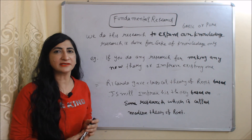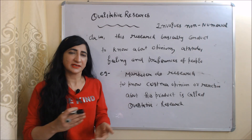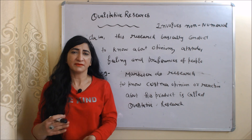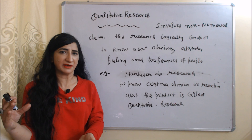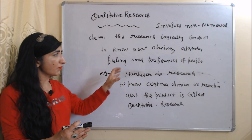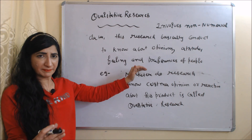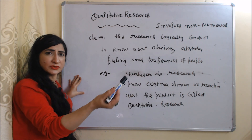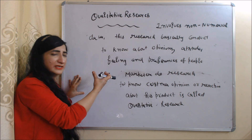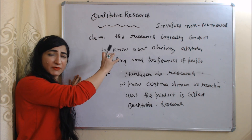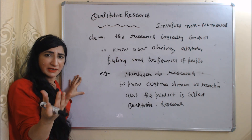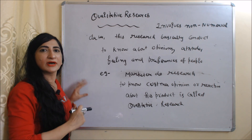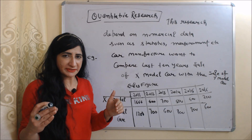Next is qualitative research. This research involves non-numerical data, meaning we don't include any mathematical numbers because we conduct this research to know about opinions, attitudes, feelings and preferences of people. Since we cannot measure opinions, attitudes, feelings and preferences in terms of numbers, we don't include mathematical numbers in this type of research. For example, a marketer doing research to know customer opinions or reactions about his product is called qualitative research.